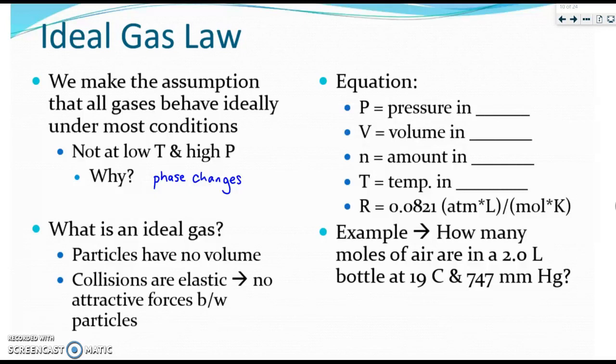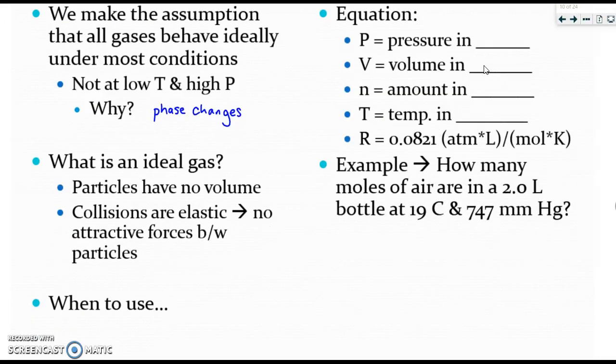An ideal gas is a gas where the particles are said to have no volume and we say that their collisions are elastic which means there's no attractive forces between the particles. If a bouncy ball was elastic it would hit the ground and every single time come back up to your hand and until you stopped it it would continue. We're going to use this equation if we are given one of each variable. So if the problem provides one of each variable not two of any we use this equation.